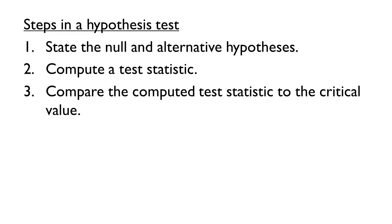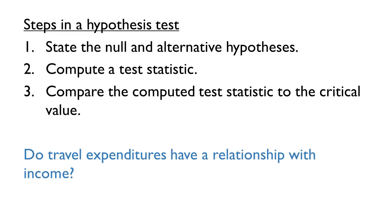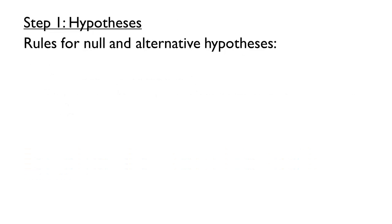Let's discuss each of these steps in more detail to answer the following question: do travel expenditures have a relationship with income? First, we need to state the null and alternative hypotheses. Intuitively, we are turning our question into a mathematical statement. There are three rules that hypotheses must follow. Let's start by discussing the rules and writing the hypotheses correctly. Later in this video, we'll try to motivate the reasons for these three rules.